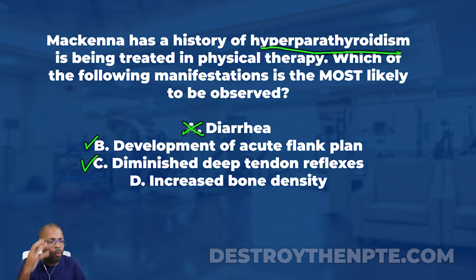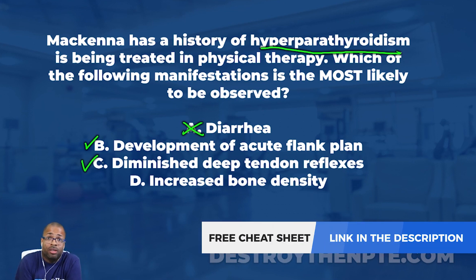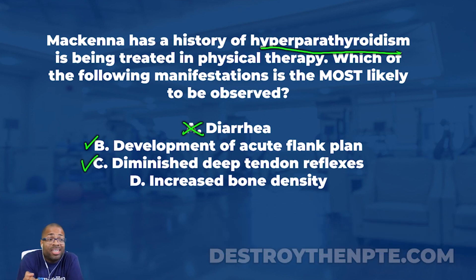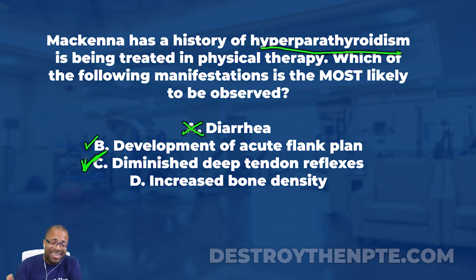Our patient in this question has a history of hyperparathyroidism, so I actually expect diminished DTRs — 100%. And if you need to understand why, it goes back to the same idea: calcium and sodium. Those voltage-gated sodium channels are critical for nerve conduction and depolarization. If there's a lot of calcium in the bloodstream, it blocks sodium from moving through the channel well. If sodium doesn't conduct well, you won't have good DTRs. So in a patient with chronic hyperparathyroidism, you see absent or diminished DTRs.